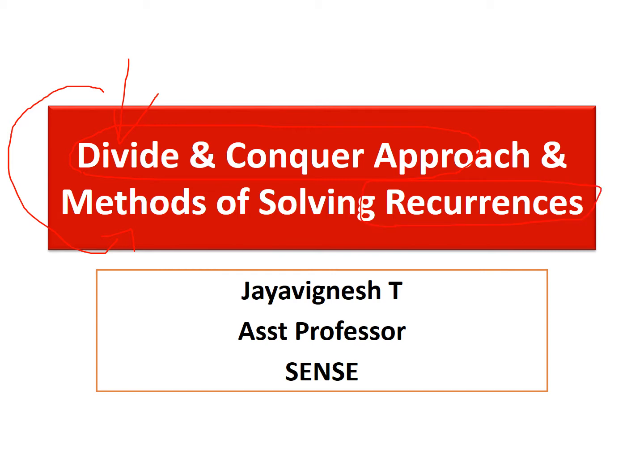Any algorithm designed using the divide and conquer approach can have its time complexity evaluated by representing it in the form of a recurrence relation. These algorithms are typically recursive algorithms. This lecture will cover the idea behind divide and conquer, how those algorithms become recursive, and how recurrence relations are used to calculate the time complexity. Our focus will be on calculating the time complexity of different recurrence relations.